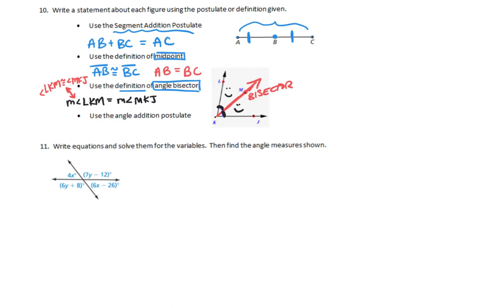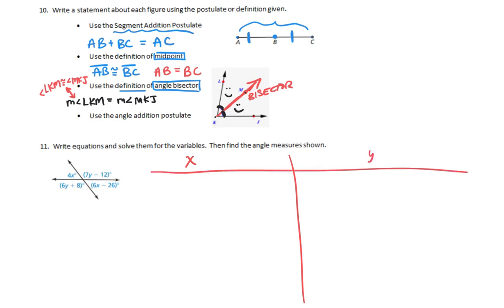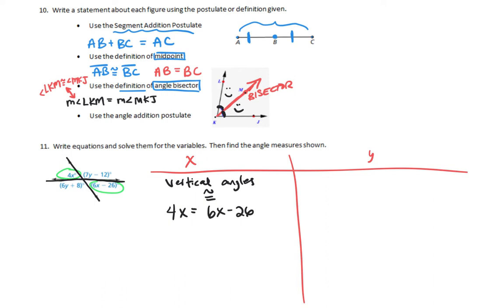Number 11: write equations and solve for the variables. Do the x variable first — don't try to do them at the same time. Looking at all the stuff with x's: those two angles are vertical angles because they're opposite each other. Vertical angles are congruent, and by the definition of congruence, they're equal — so 4x equals 6x minus 26.